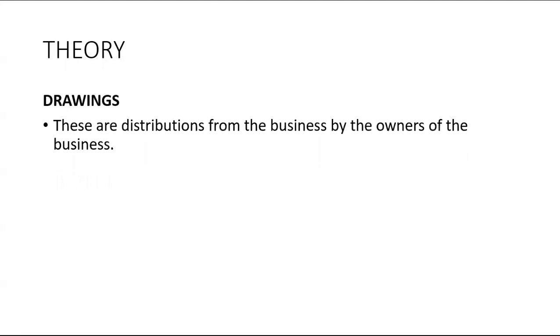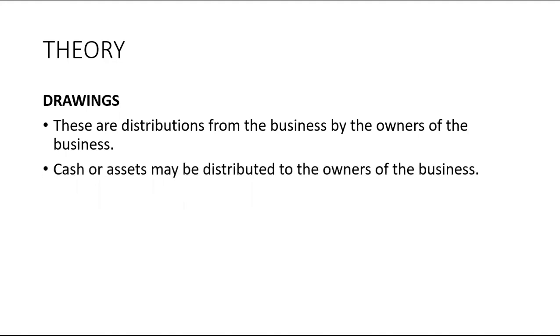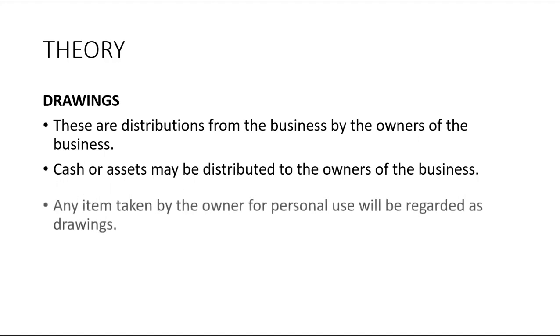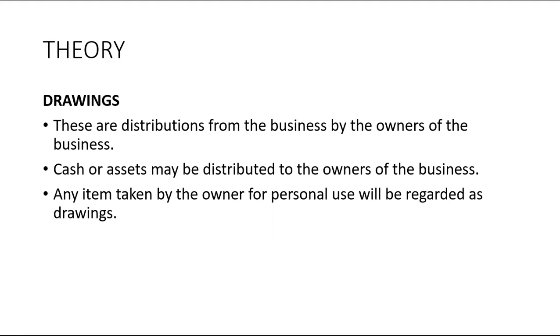This is a transaction between the owner and the business, and anything that happens between the owner and the business we need to account for. Whenever the owner takes anything from the business for personal or private use, it is called drawings. Drawings are simply distributions from the business to the owners of the business — it can be cash, assets, or expenses. Any item taken by the owner for personal use will be regarded as drawings.